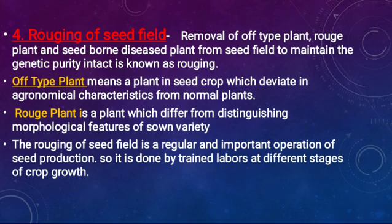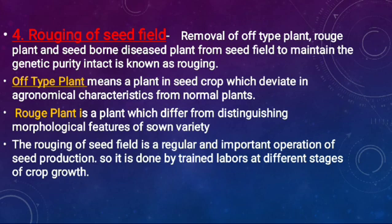Off-type plant means a plant in the seed crop which deviates in agronomical characteristics from the normal plant. Rogue plant is a plant which differs in distinguished morphological features of the sown variety. Rogging of the seed field is a regular and important operation of seed production, done by trained laborers at different stages of crop growth.